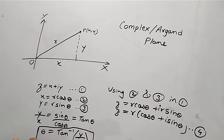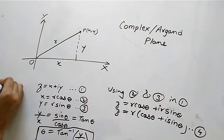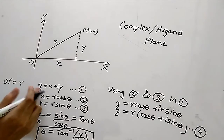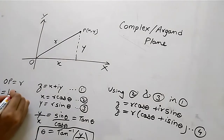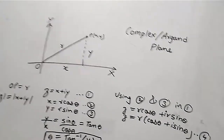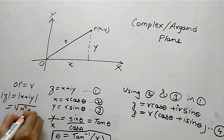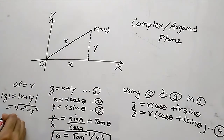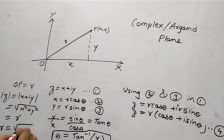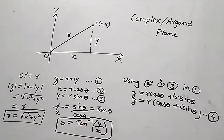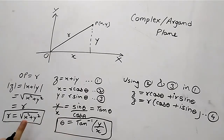This theta value is the argument. Now, R is OP — the modulus. The modulus of Z, written as mod(Z), is equal to mod(X plus iY), which equals the under root of X squared plus Y squared. So, R is equal to under root of X squared plus Y squared.